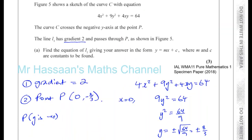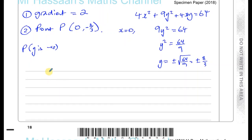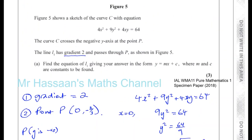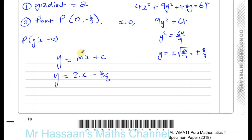We now have all the information needed to find the equation of the line. We know the point and the gradient, so we can use y = mx + c. Since we know the y-intercept is −8/3 and the gradient is 2, we can write directly: y = 2x − 8/3. It's easier to use this form rather than y − y₁ = m(x − x₁) because we know the y-intercept directly. That's the answer to part A.